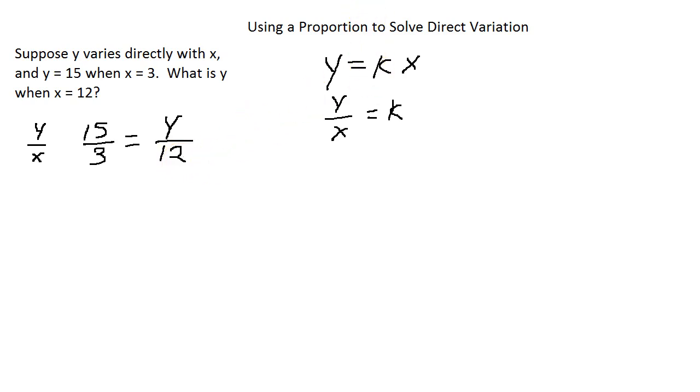Now we do our cross product. If we do cross product, we're going to be taking the 15 times the 12, and the 3 times the y.